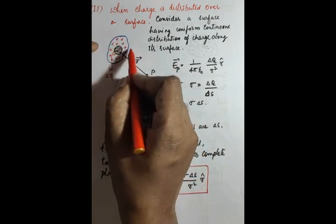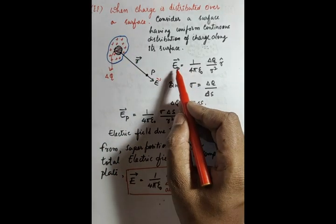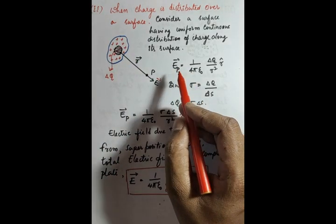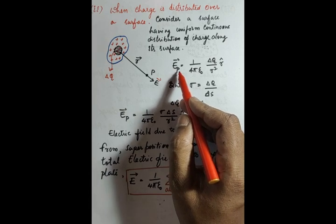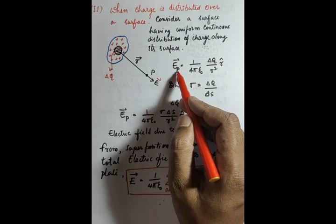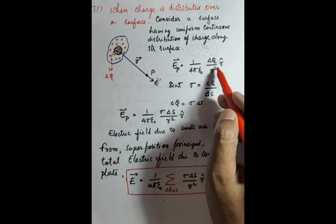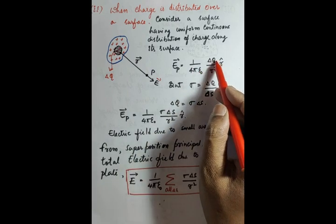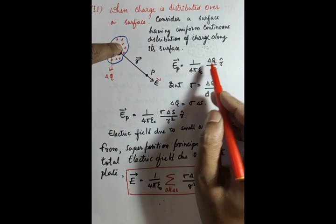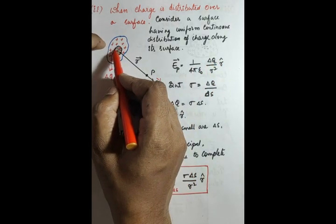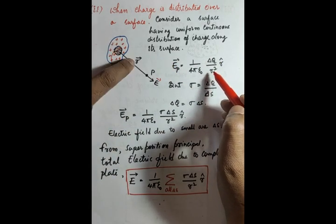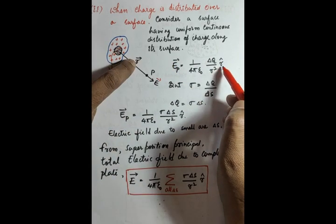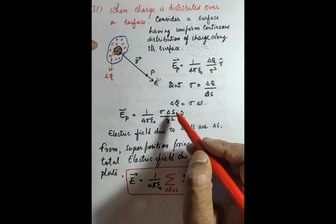Then we will calculate for all such elements. The electric field derivation gives: vector E_p = (1/4πε₀) × (δq / r²) × r̂, where r̂ gives the direction. The source charge here is δq from the small surface area, and r is the distance from that element to point P.